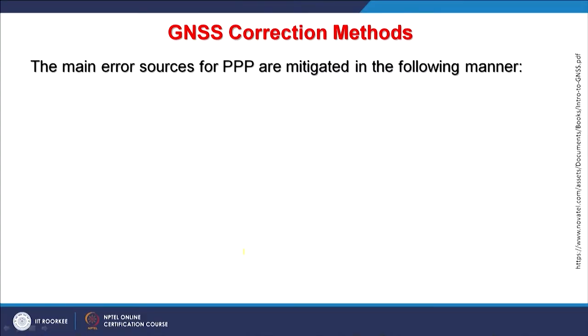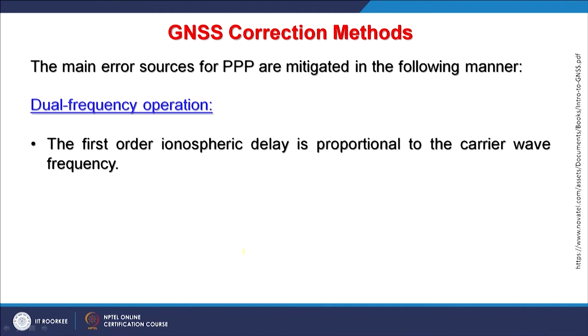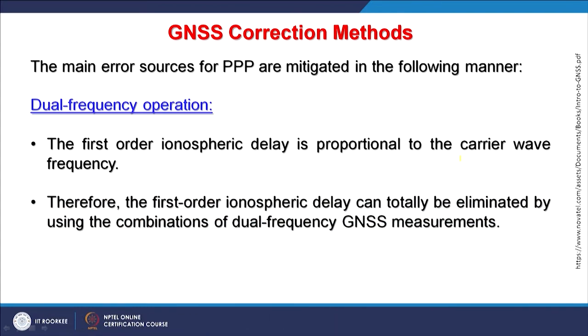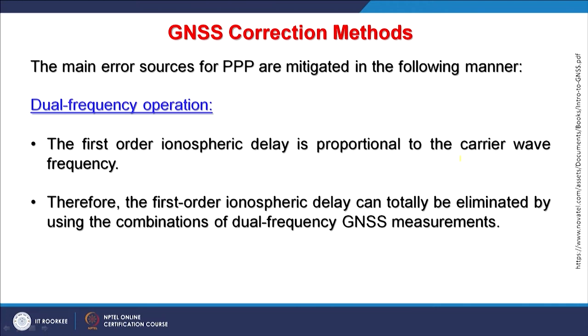The main error sources for PPP are mitigated through dual frequency operations because these receivers receive signals in two frequencies. The first order ionospheric delay is basically proportional to the carrier wave frequency and those can be removed. The first order ionospheric delay can be totally eliminated by using combinations of dual frequency GNSS measurements — a topic we have already discussed when looking at how ionospheric delays cause errors in positioning.